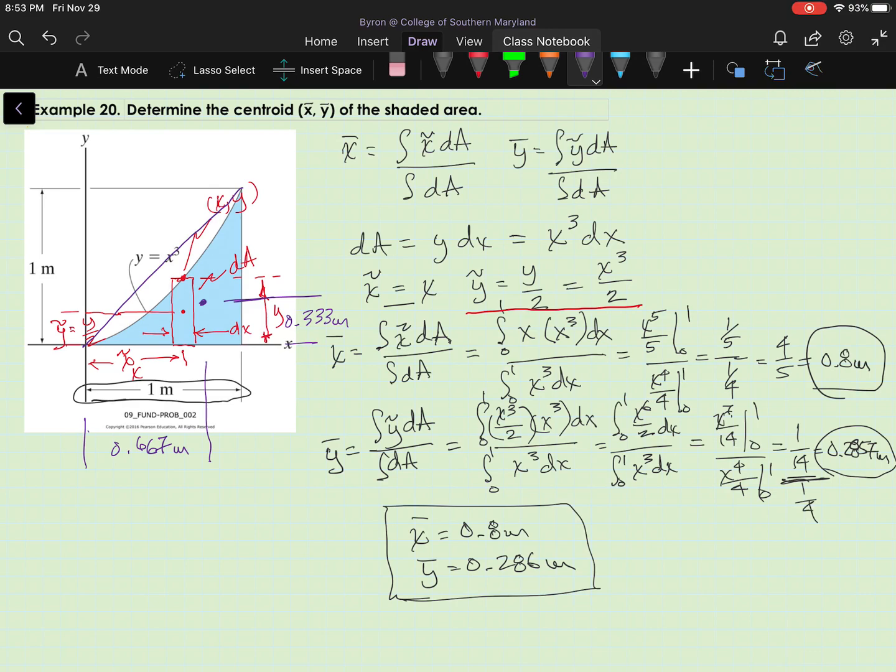Now, since the actual function, the actual curve, the area under the curve, is less than that triangle, I would expect my centroid of the actual area under y equals x cubed to be sort of further this way, right? And so I'll bounce the answers that I got against that check. And if they don't match up with that check, then I've done something wrong. So let's look.